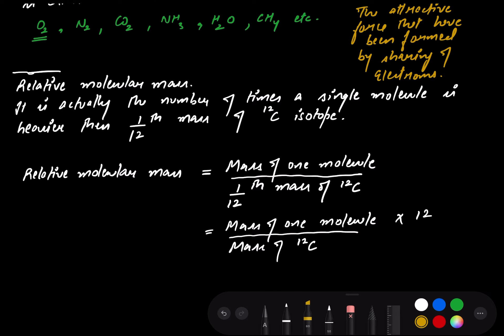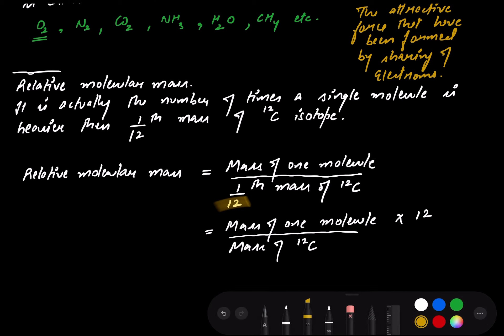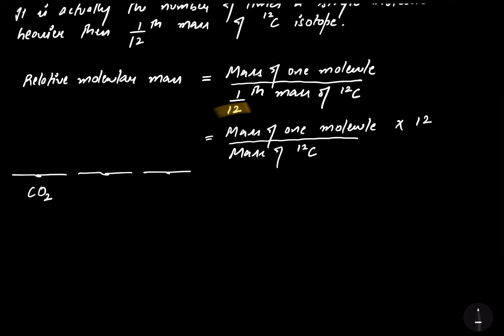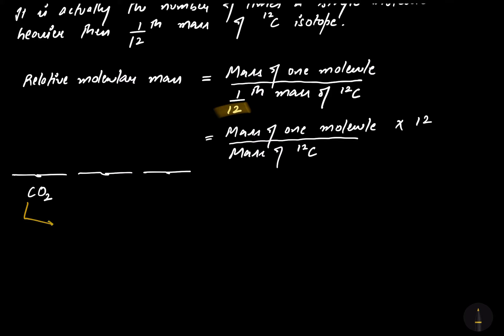Here, I have taken the twelve to the numerator. Let me give you an example. I am taking the example of the carbon dioxide molecule, CO2. What is the mass of carbon? It is 12 AMU.